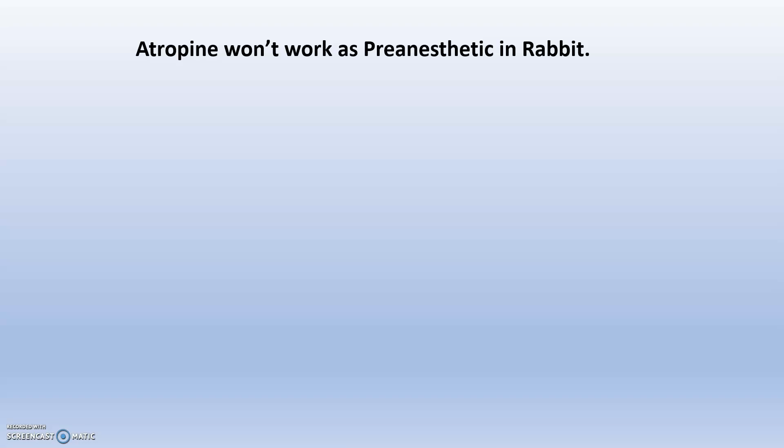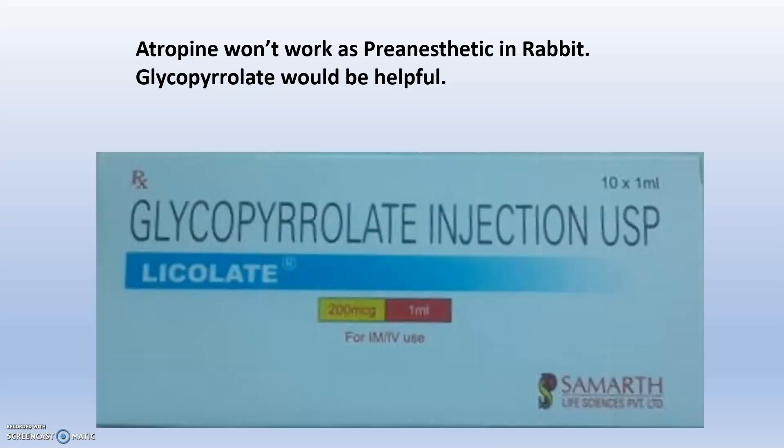There is a well-known drug used as an anti-cholinergic pre-anesthetic, mainly in small animal practice. The name of the drug is glycopyrrolate. Glycopyrrolate would be helpful for its anti-cholinergic activity in the case of rabbits. This is the glycopyrrolate injection used as an alternative to atropine in rabbits.